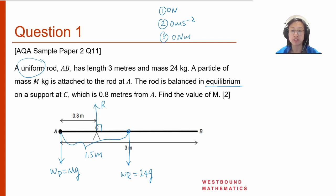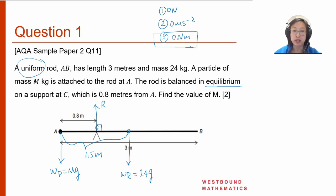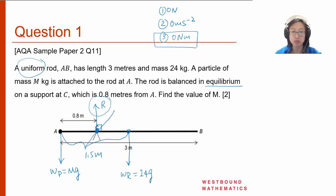To find m, I'll use the third condition — zero net turning effect. I'll take moments at the fixed point C. That way I don't need to consider the turning effect of the normal reaction R, because the perpendicular distance from R to the axis of rotation at C is zero. Looking at the two weights: the weight of the particle has an anticlockwise turning effect, and the weight of the rod has a clockwise turning effect about C. These two must cancel to give zero net moment.